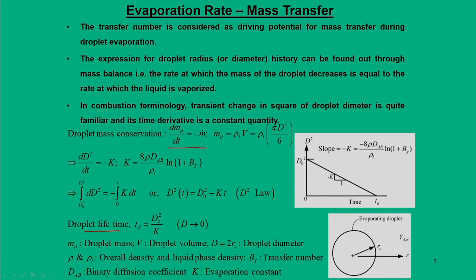Droplet lifetime with respect to mass transfer diffusion is found from droplet mass conservation: the rate at which the mass of the droplet decreases equals the rate at which the fluid is vaporized, so dm_d/dt = −ṁ. Using the spherical volume and liquid-phase density, we define the evaporation constant K = 8ρD_AB / ρ_L · ln(1 + B_Y). From this we derive the d-square law: d²(t) = d₀² − Kt.